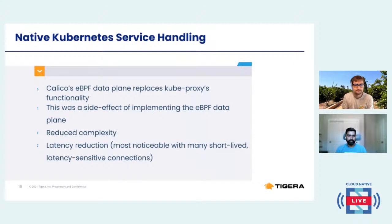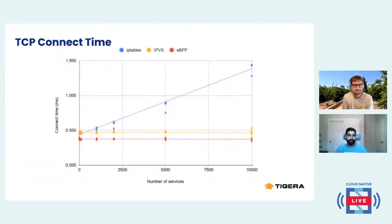We have achieved reduced latency. kubeproxy's implementation uses a list of rules that grows with the number of services, so latency gets worse as the number of services increase. Both IPVS mode and our implementation use an efficient map lookup instead, resulting in flat performance. You can see that eBPF is way below compared to IP tables and IPVS — meaning it's faster with TCP connect time testing.